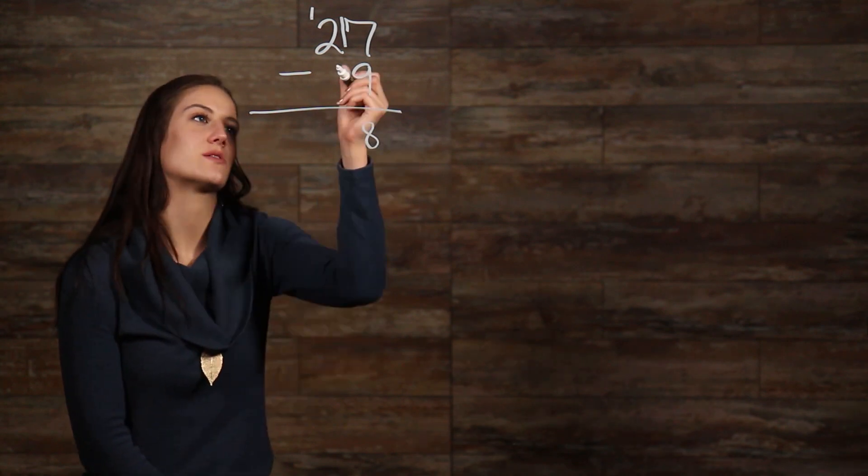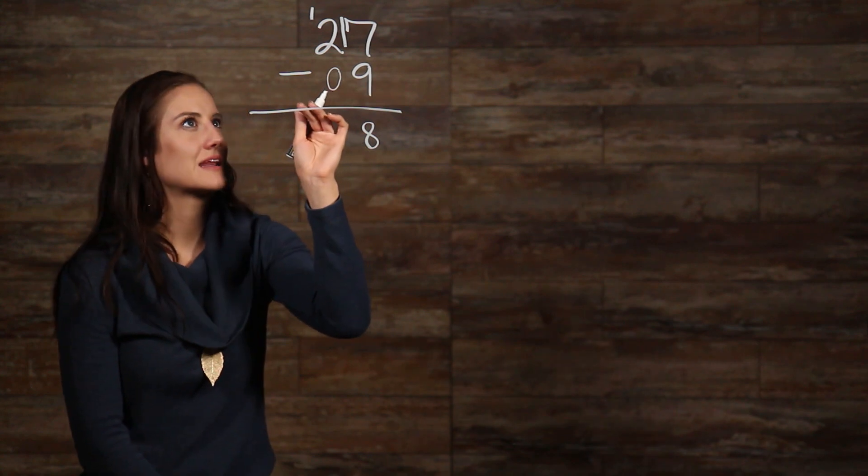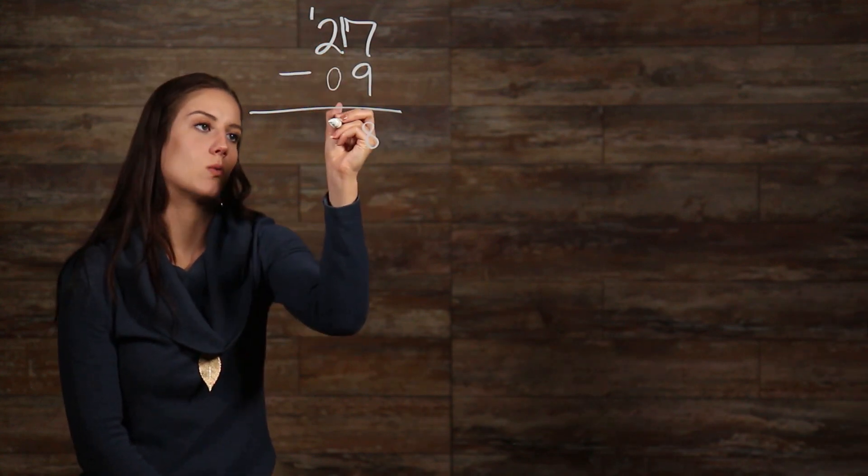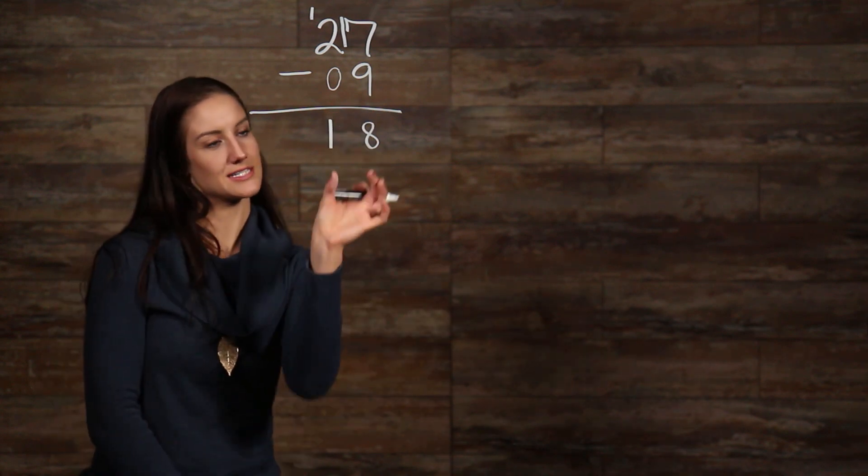Now, we can imagine that there's a 0 here to the left of our 9, which means that we aren't subtracting anything from the 1 that we have left over. So, we can just go ahead and bring that 1 down. So, that gives us 18 as our answer.